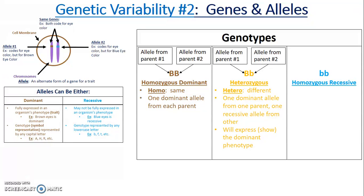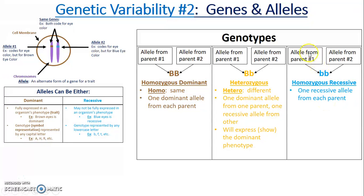The last type is two lowercase letters, which means homozygous recessive — homo meaning the same, both showing a recessive genotype. There is one recessive allele from each parent: parent one gave a recessive allele for blue eyes and parent two also gave a recessive allele, so the child with genotype lowercase b lowercase b will have blue eyes.